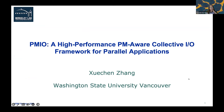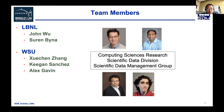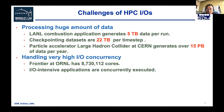Hello everyone, I'm Shujing Zeng, an assistant professor from Washington State University Vancouver, which is part of the WSU system located outside Portland, Oregon — we have about 3,500 students. Today I'm presenting our project: PM-IO, a High-Performance Precision Memory-Aware Collective I/O Framework for Parallel Applications. This is a collaboration with lab scientists from the Scientific Data Management Group — John Wu and Suren Byna — along with my students Keegan and Alex.